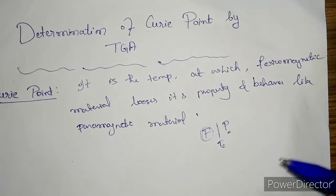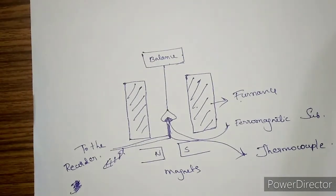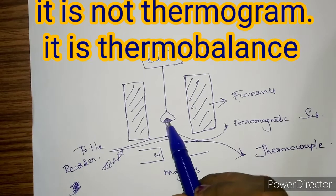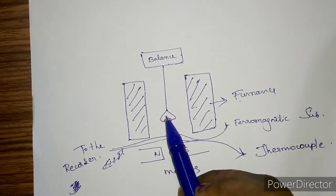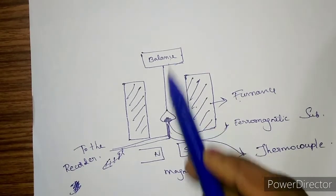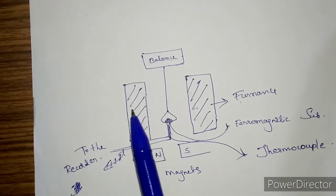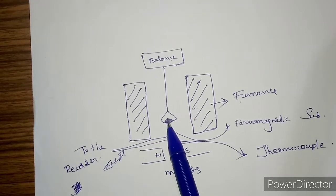This Curie point can be determined using the TGA. This is the setup or thermogram for the TGA — the instrument used in TGA. What we will be doing is taking our ferromagnetic material and placing it in the sample holder. That sample holder is connected to the balance and placed between the furnace. We will also be keeping magnets below this sample holder.